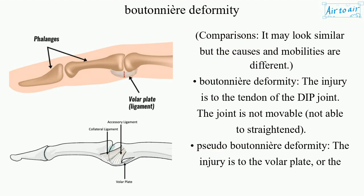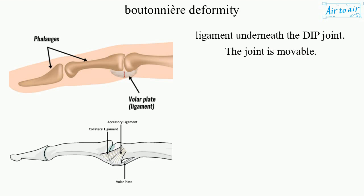These conditions may look similar but the causes and mobilities are different. Boutonnière deformity: the injury is to the tendon of the PIP joint; the joint is not movable and cannot be straightened. Pseudo-boutonnière deformity: the injury is to the volar plate or the ligament underneath the PIP joint; the joint is movable.